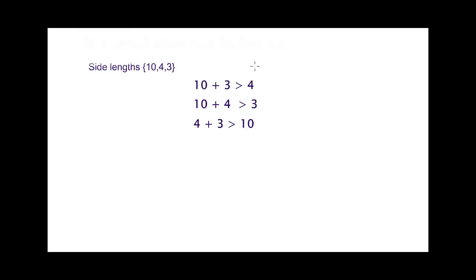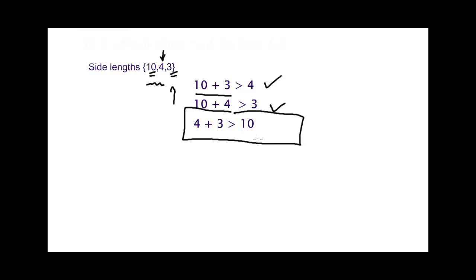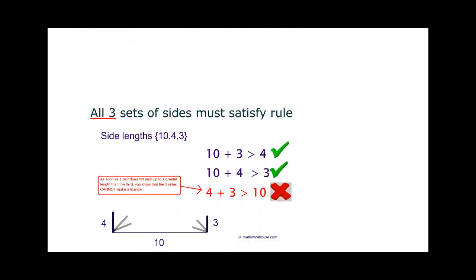Let's look at side lengths of 10, 4, and 3 and see if we can make a triangle. Let's look at the relationship between each pair. First, 10 and 3 — 10 plus 3 is bigger than 4. Then 10 and 4 — 10 plus 4 is bigger than 3. But there is a difference: 4 and 3, when you add them up, they're not bigger than 10. So why are we looking at each pair and seeing what's bigger than the third side? Because that is exactly what the triangle inequality rule is all about.